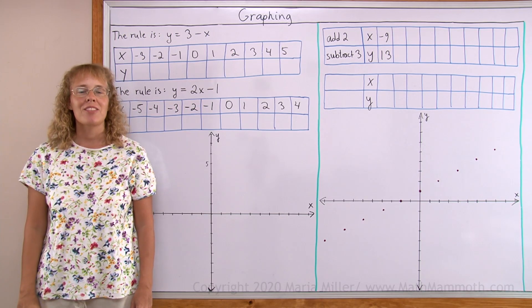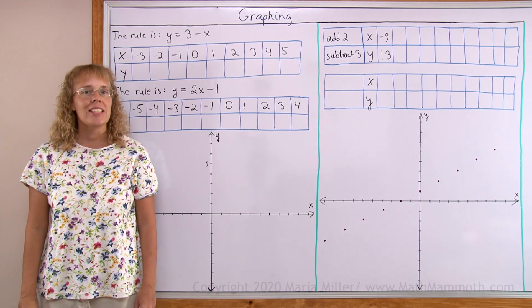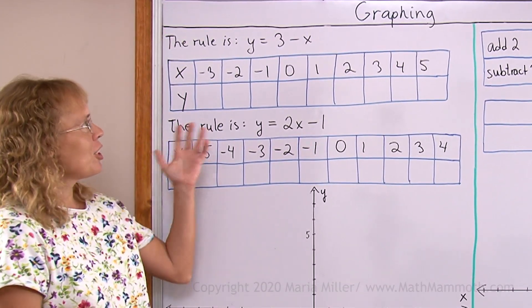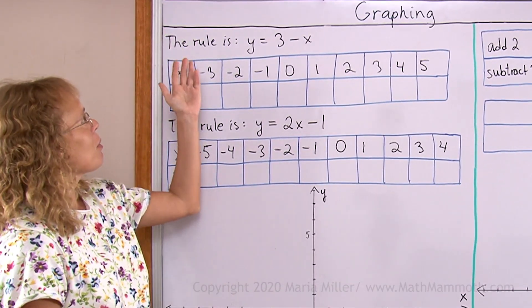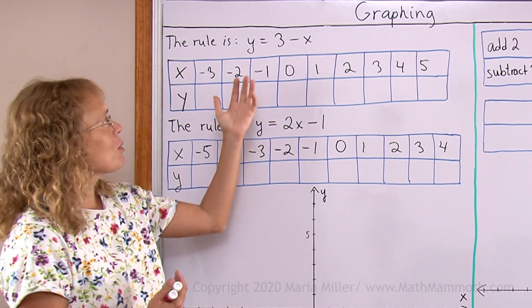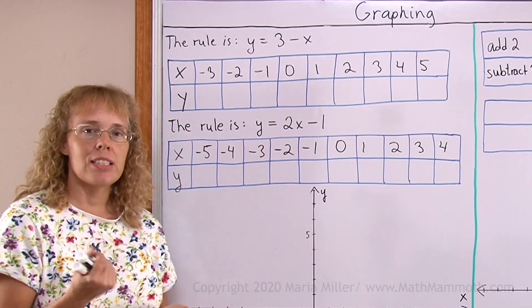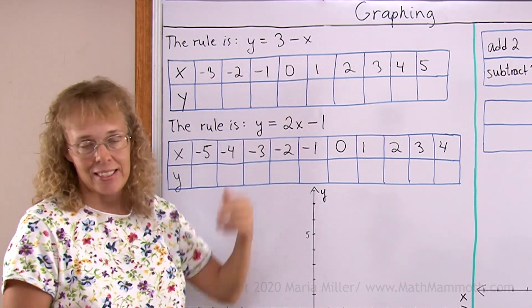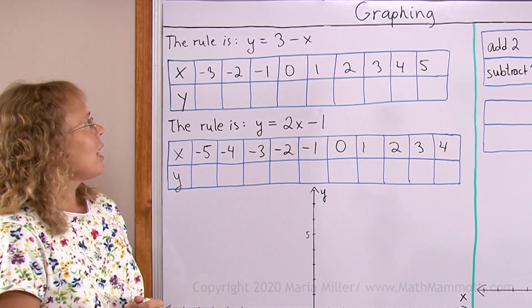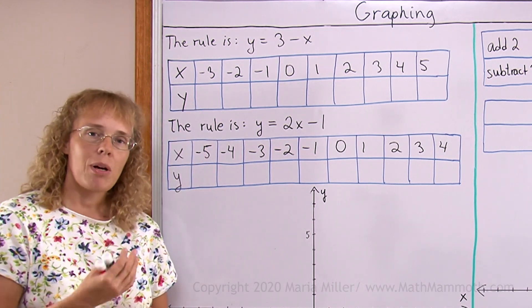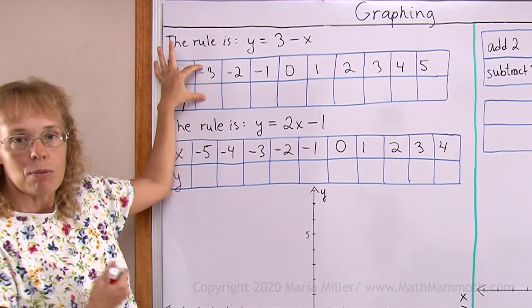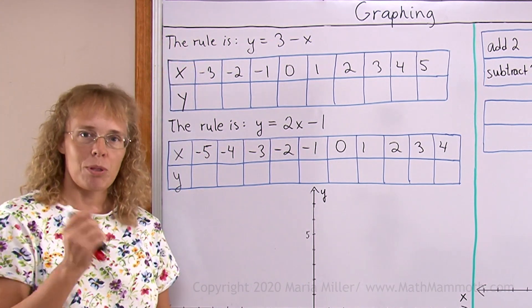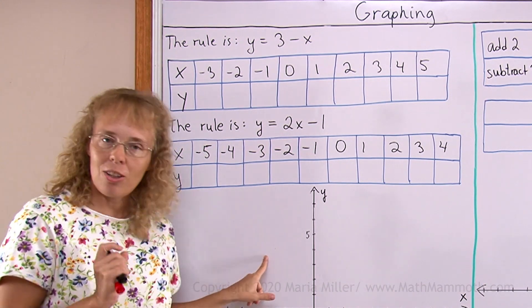Hello, my name is Marianne Miller from MathMammoth.com. In this lesson we're going to study some graphing. Our first example is where we are given a rule. This rule relates y and x, the y and x coordinates of the points. The rule says that y is found by 3 minus x. And in this table we will have x and y values. Each one of these will be one point. The pair of x and y, the pair of those two numbers, is going to be one point that we can plot here in the coordinate plane.